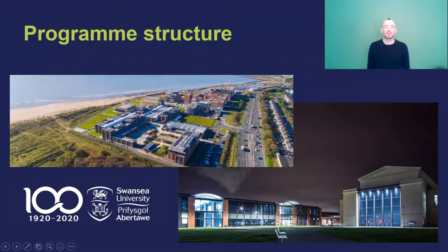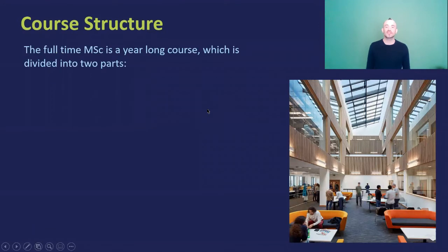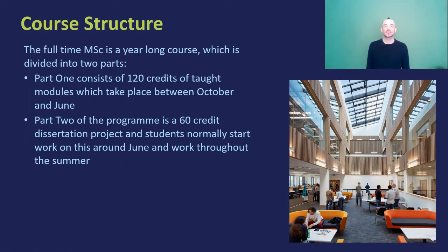So to go to the program structure, the full-time MSc is a year-long course and it's divided into two parts. Part one is 120 credits of taught modules and these take place between October and June. Then part two is a 60 credit dissertation project. Students normally start work on this around June and work through the summer.